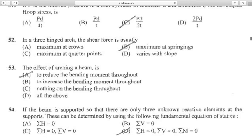Question 53: The effect of arching a beam is to reduce the bending moment throughout. Why is the beam arched shape? That is the effect - to reduce bending moment through that section.